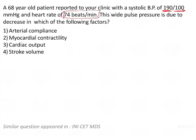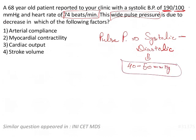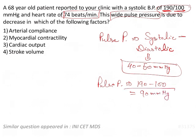We have to see which reduction in the following factors is going to cause this wide pulse pressure. The pulse pressure is the difference between the systolic BP and the diastolic BP. If you subtract the diastolic from the systolic you get the pulse pressure, and normally it is 40 to 50 mmHg. In this question, systolic is 190 and diastolic is 100, so the pulse pressure is 190 minus 100, which is 90 mmHg — more than 50 mmHg — which is why we call it wide pulse pressure.